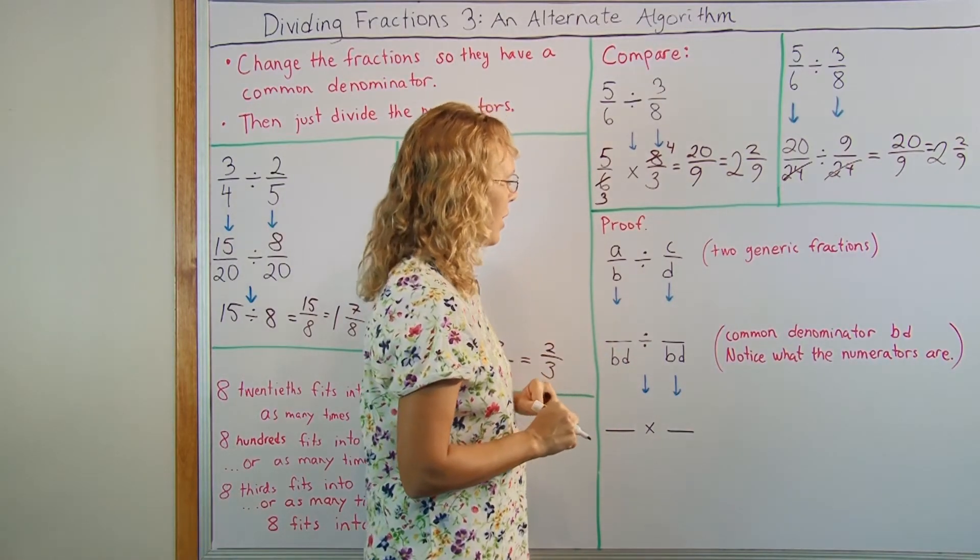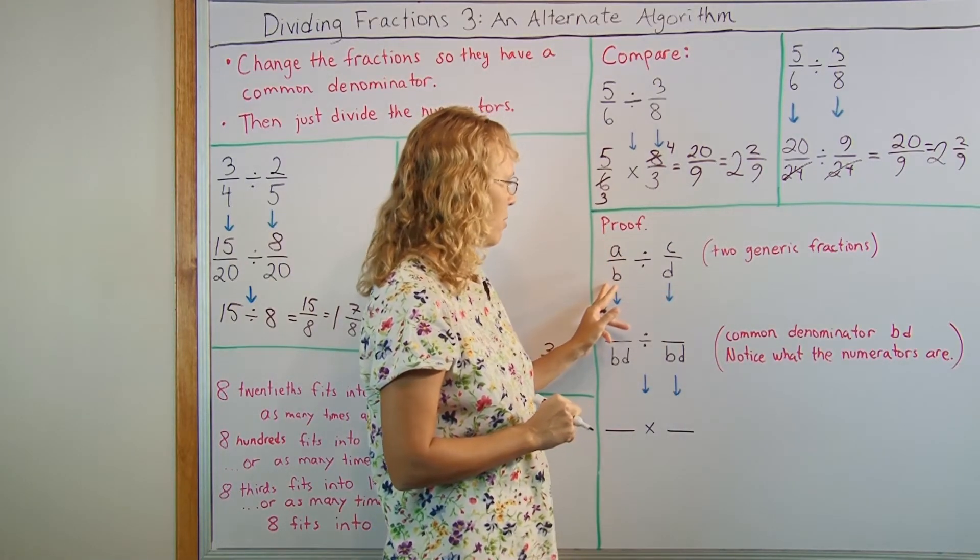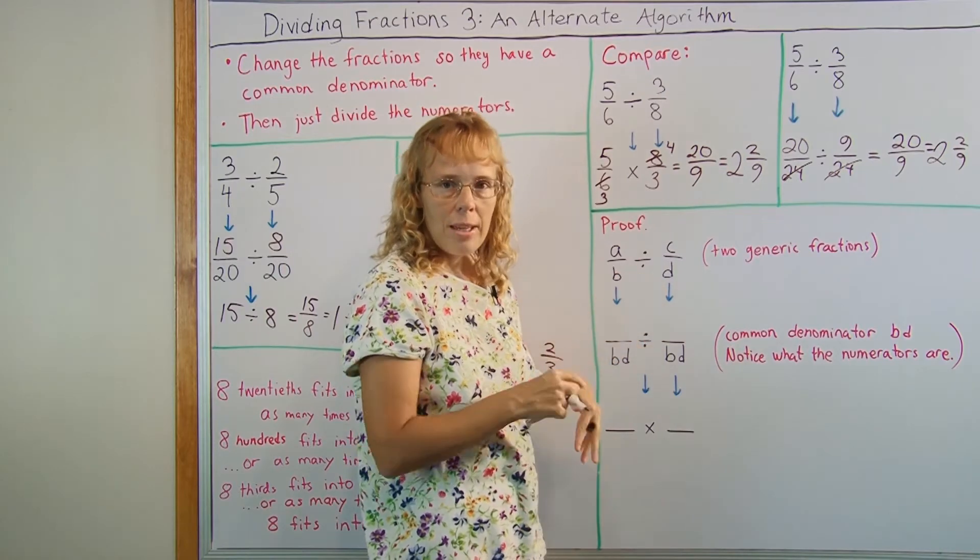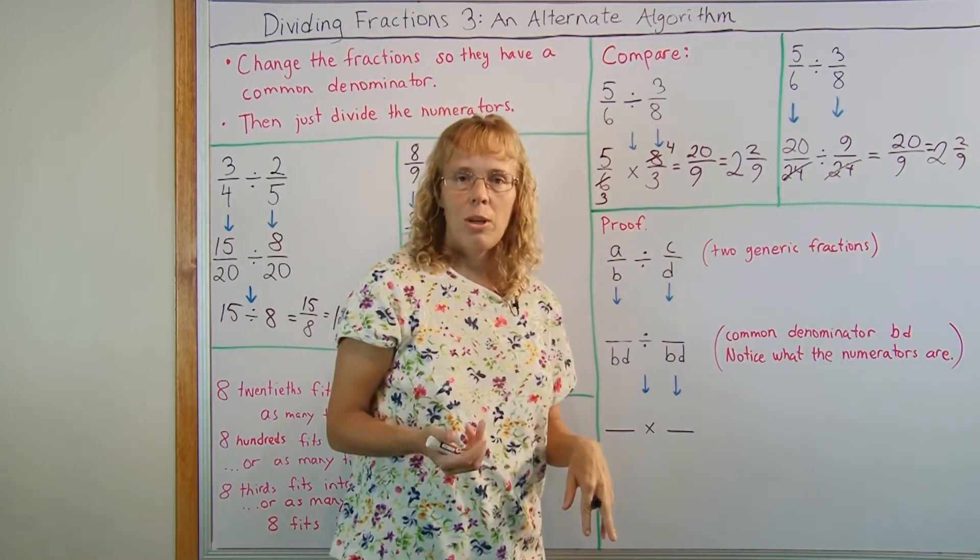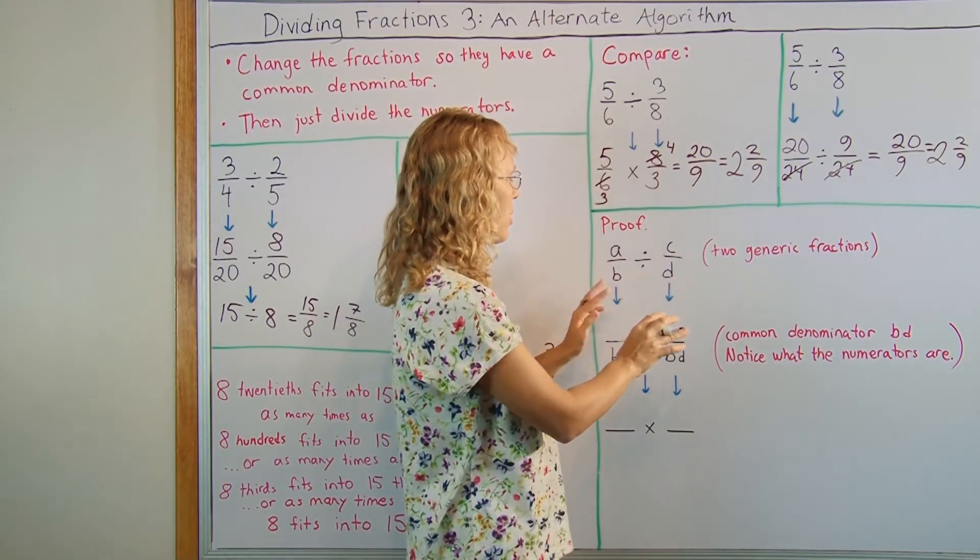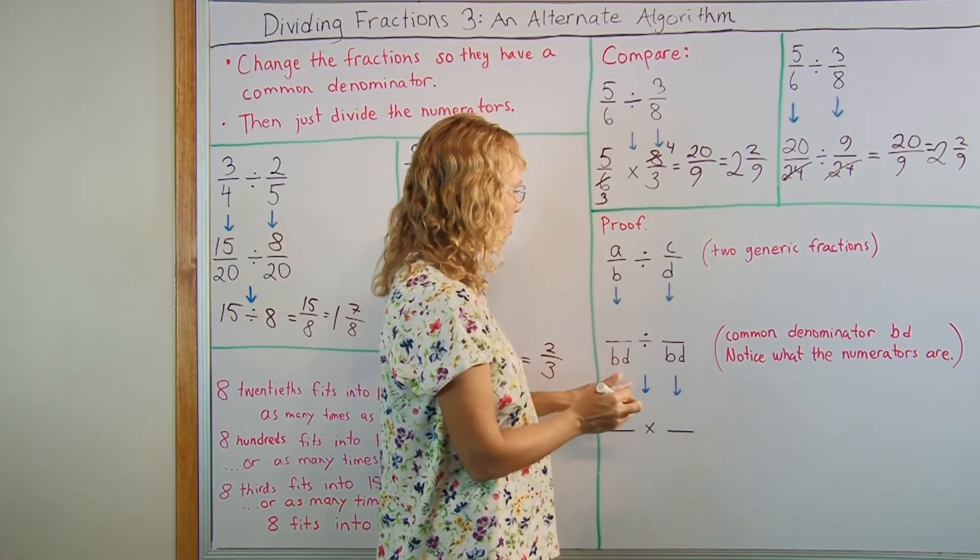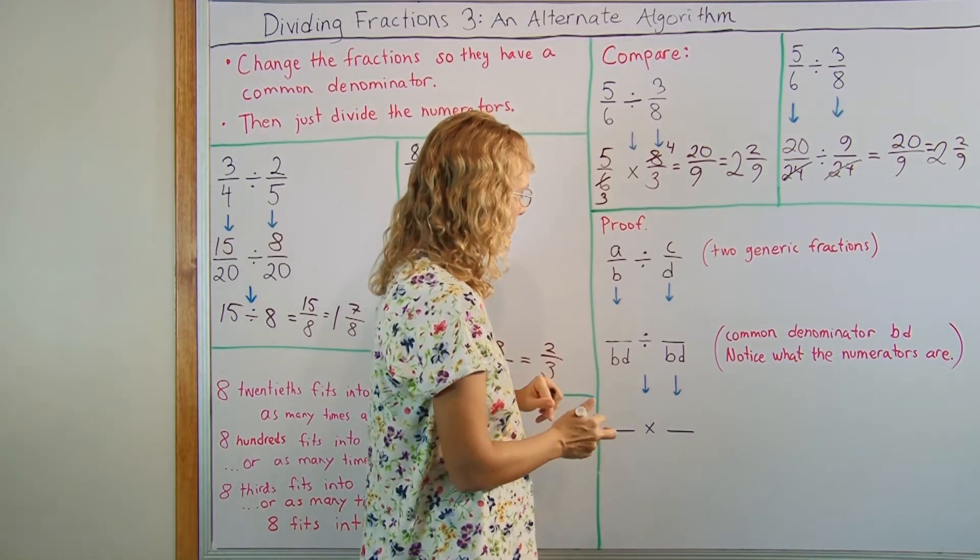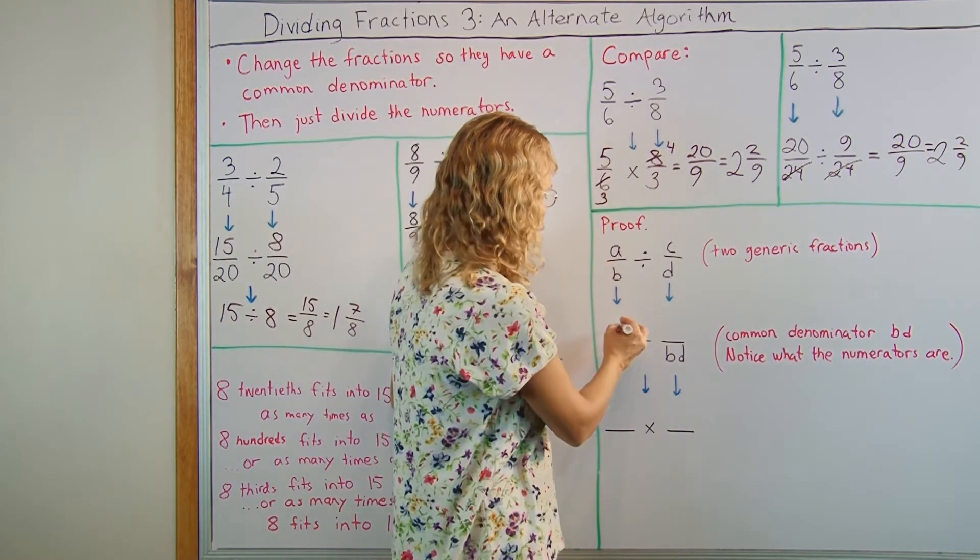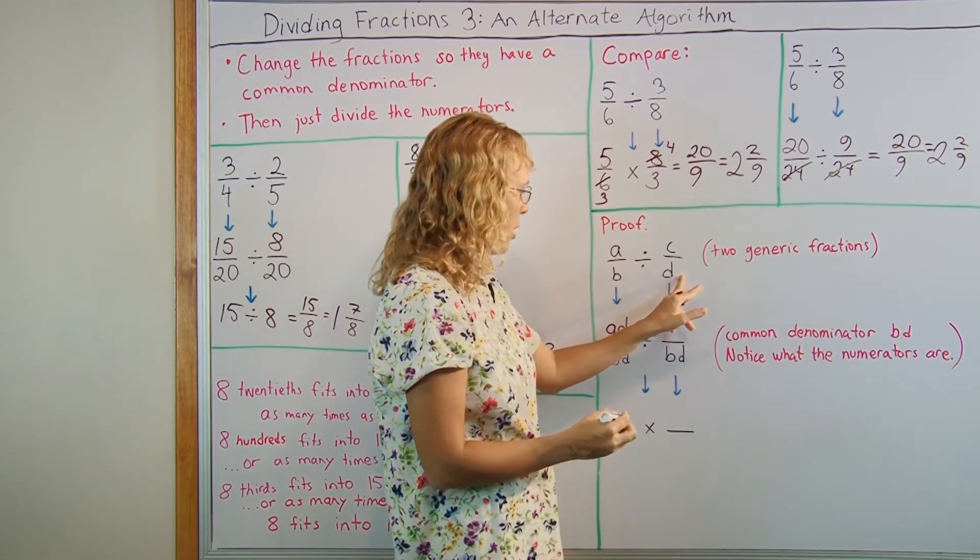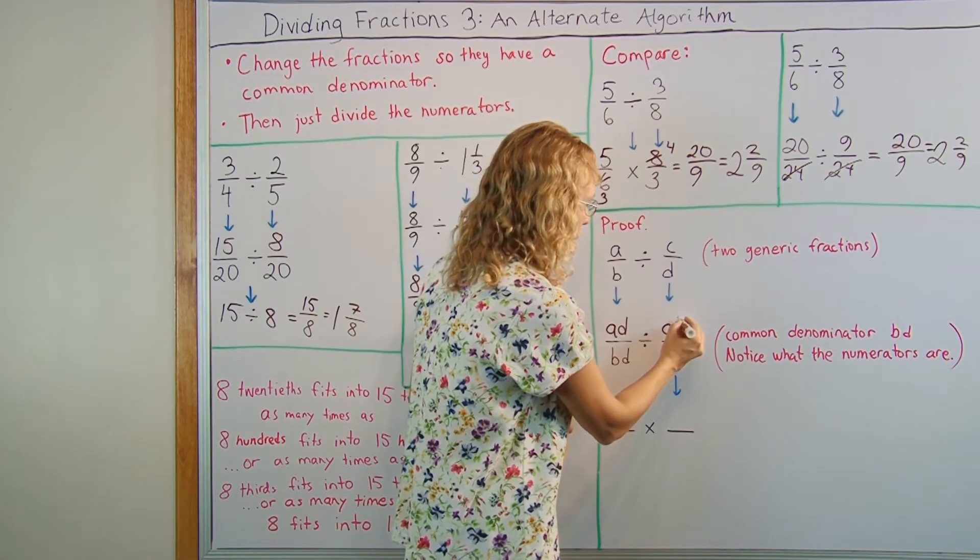And here is the proof now that it actually works. We have two fractions that we are dividing. A over B is the first fraction and then C over D is the other. Of course A, B, C, D are whole numbers. And we first find a common denominator. And since we don't know anything about B and D, we are just going to choose B times D as the common denominator. That is surely a common multiple of B and D. It will always work. And there are the numerators. B got multiplied by D. So A has to get multiplied by D too. We get AD here. And here D got multiplied by B when we come here. So C gets multiplied by B too. CB.